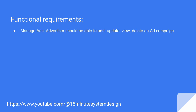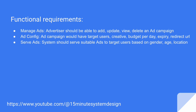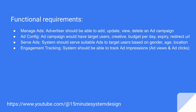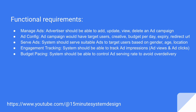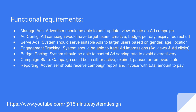Let's talk about functional requirements. Advertisers should be able to add, update, view, or delete an ad campaign. An ad campaign would have target users, creative, budget per day, expiry, and redirect URL attached to it. The system should be able to serve only suitable ads to target users based on gender, age, and location. The system should be able to track ad impressions like ad views and ad clicks. The system should be able to control the ad serving rate to avoid over delivery. A campaign would be in either an active, expired, paused, or removed state. Advertisers should receive a campaign report and invoice with the total amount to pay.